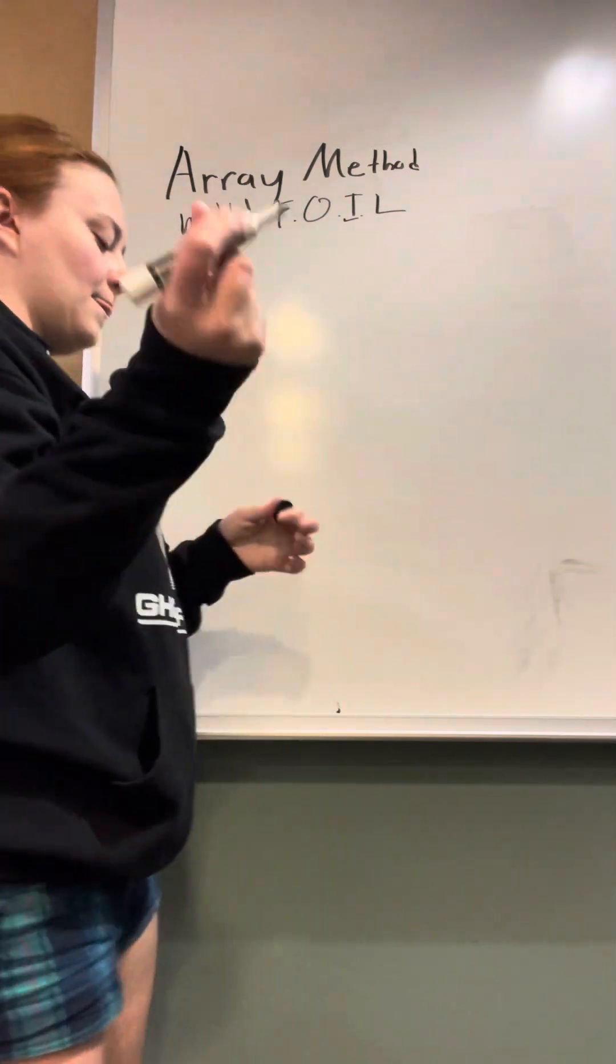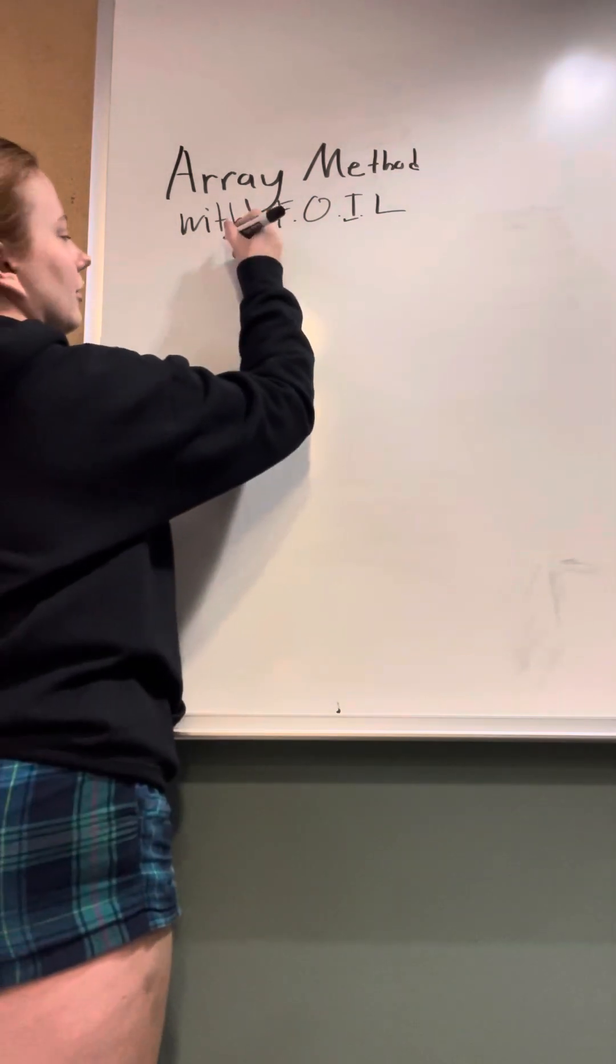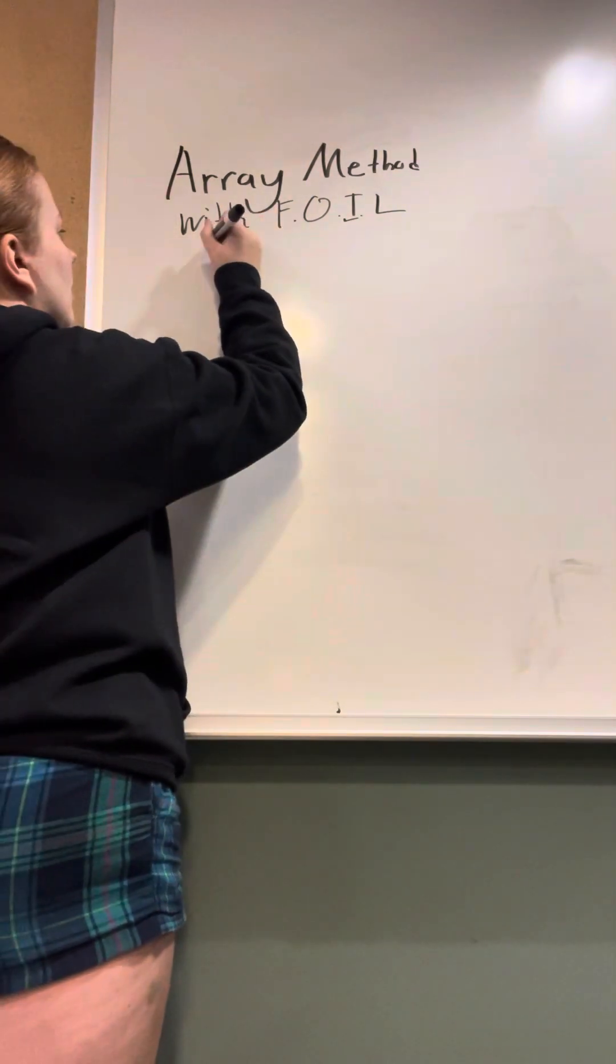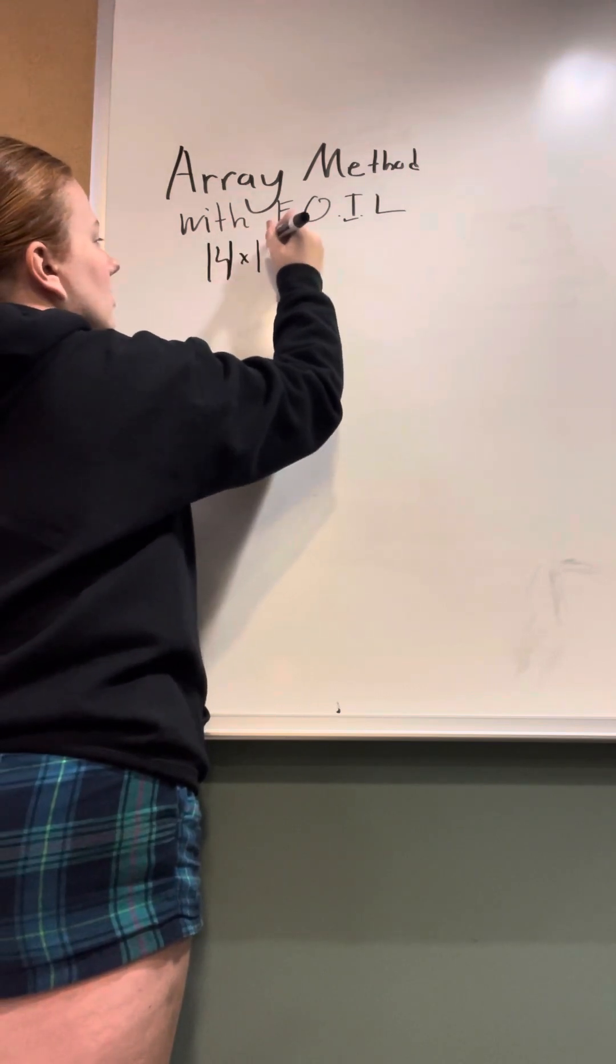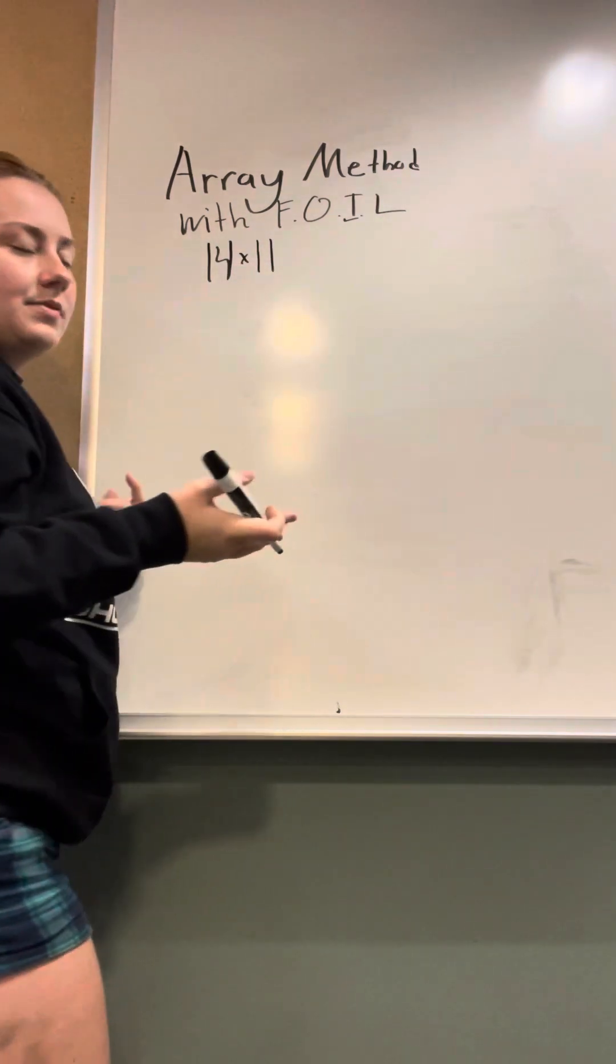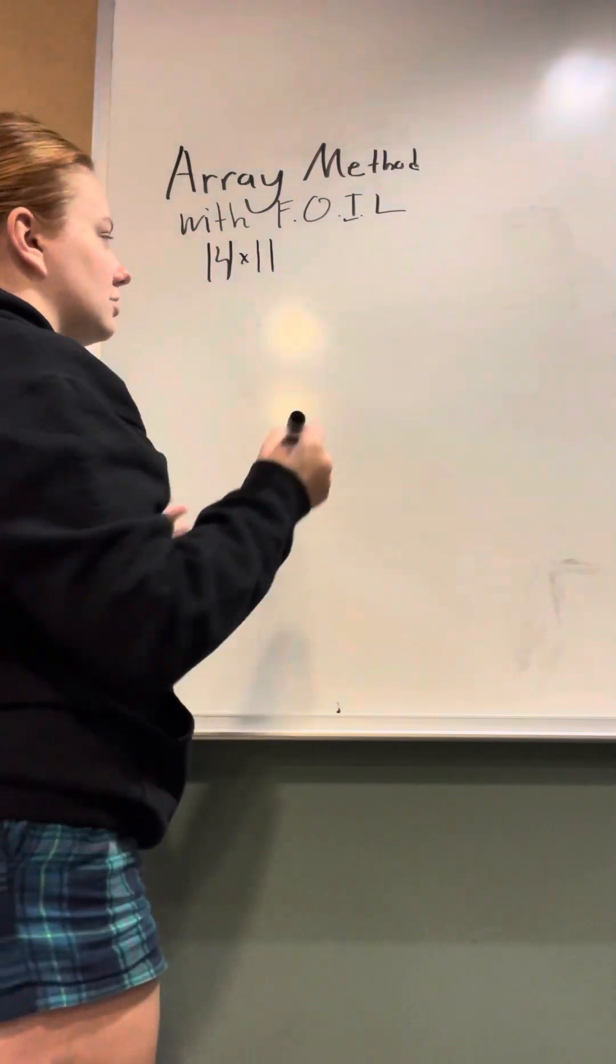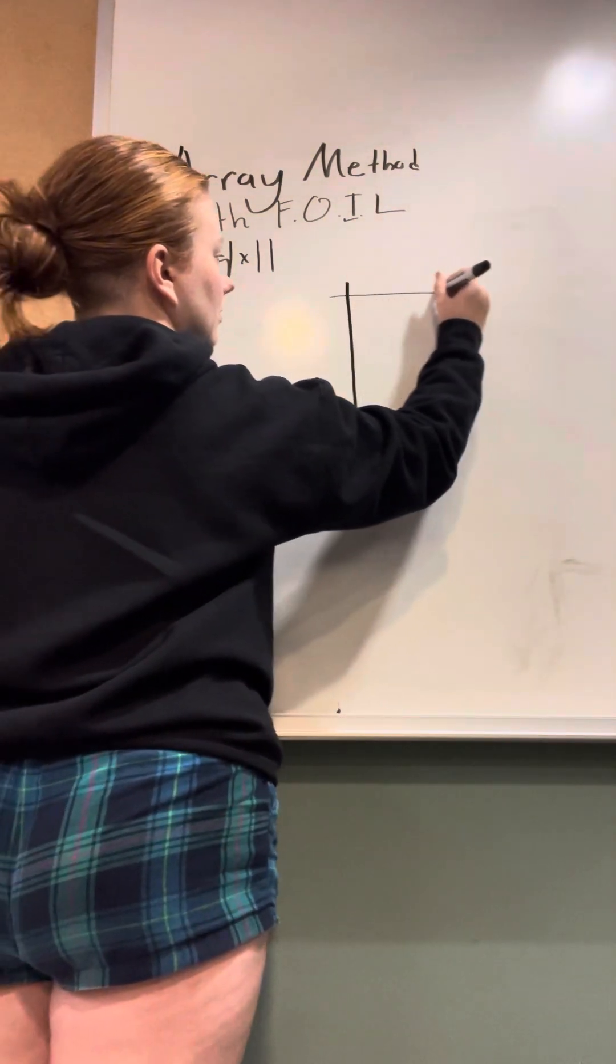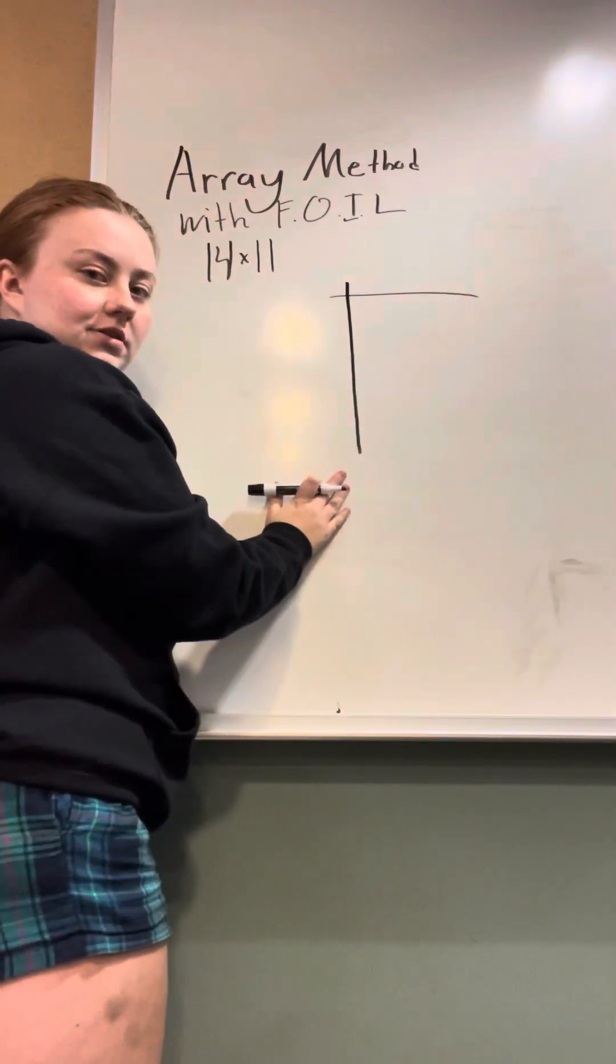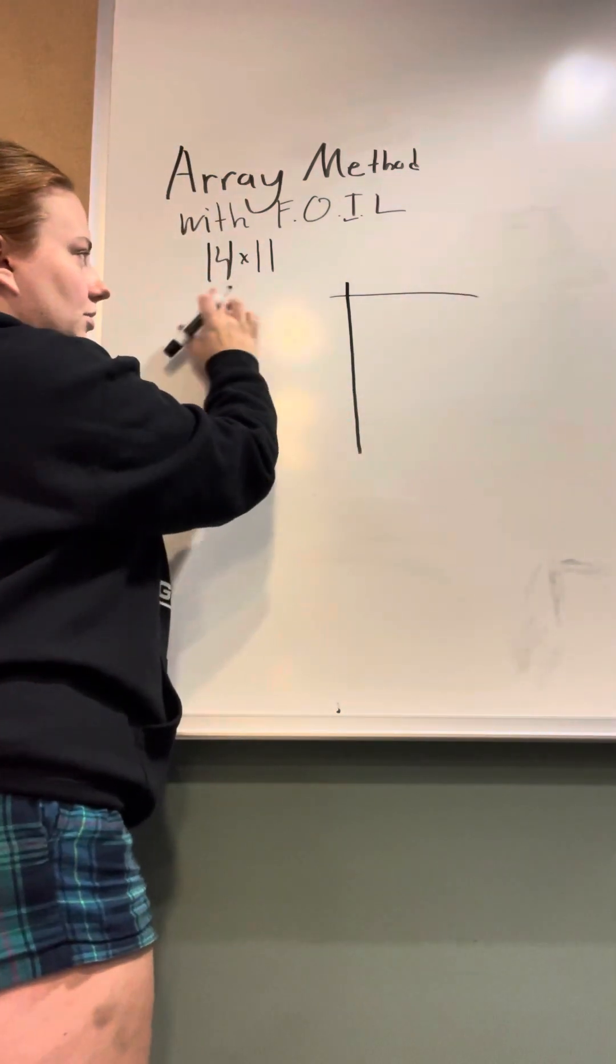So for this problem, our numbers are going to be 14 times 11. Because we're doing the array method, the first thing that I'm going to do is draw our array, which looks like this, and then you fill it in using this equation.